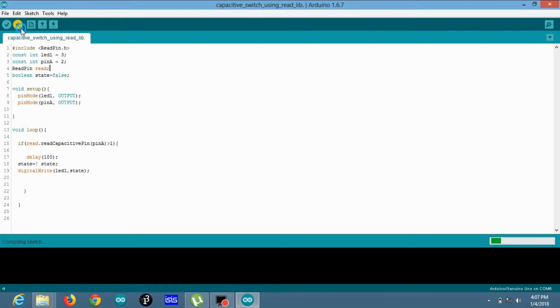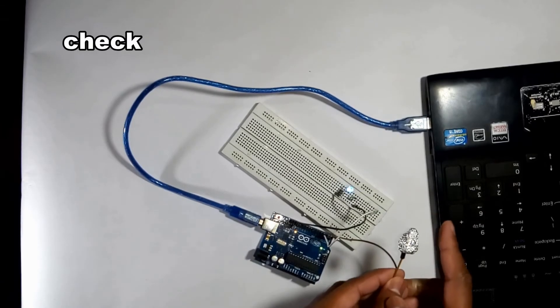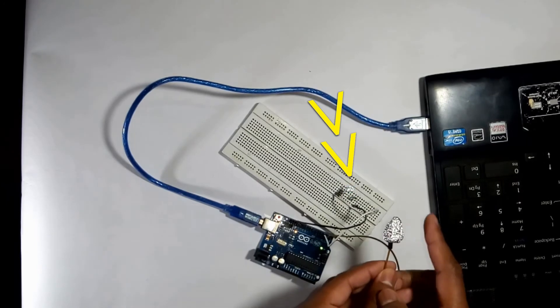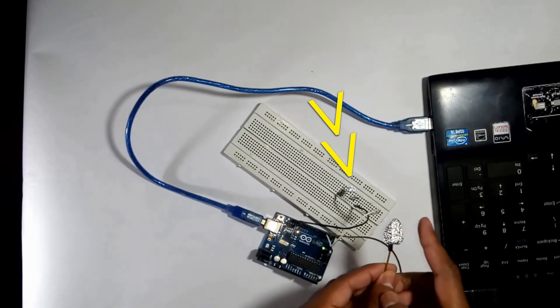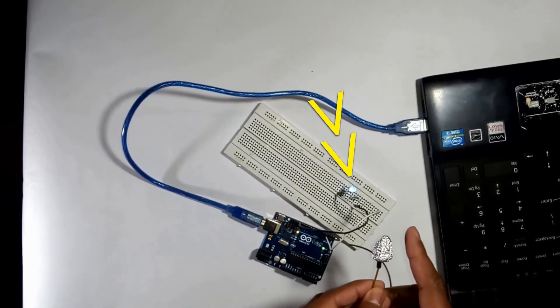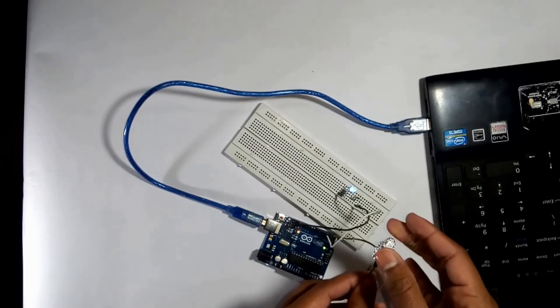Upload the program. You can see here. Okay, it's done uploading. Now check it. Yeah, it's perfect working. When I touch it, it glows. When I touch it again, it's off. You can see here.